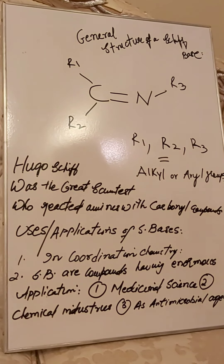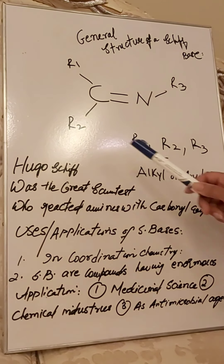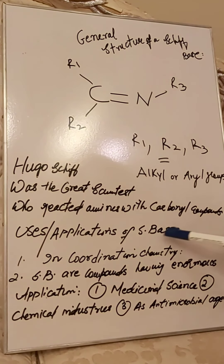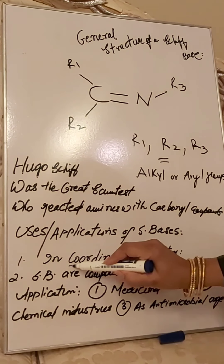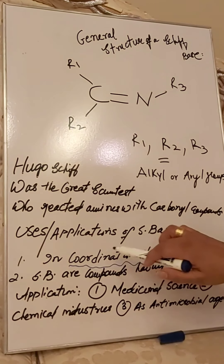Schiff bases are formed by the polycondensation of diamines with various dicarbonyl compounds. They hold effective conjugation systems. Their uses and applications include coordination chemistry — meaning they can act as ligands in inorganic chemistry. Please go through the term 'coordination chemistry' and 'ligands' as these are important related concepts.